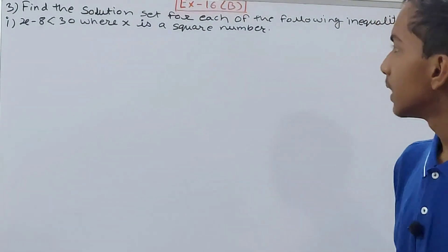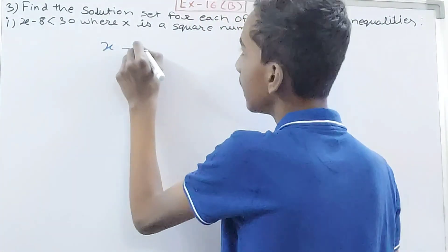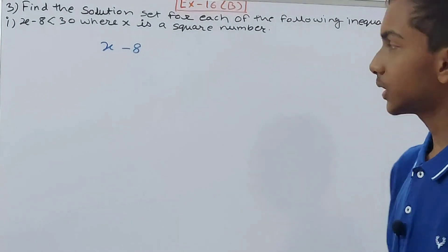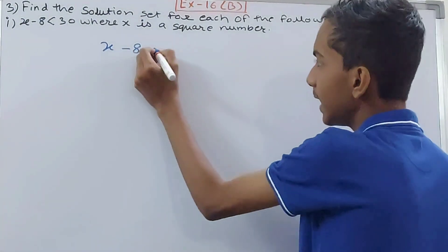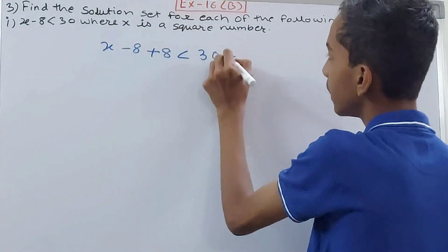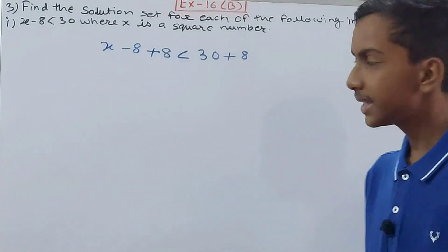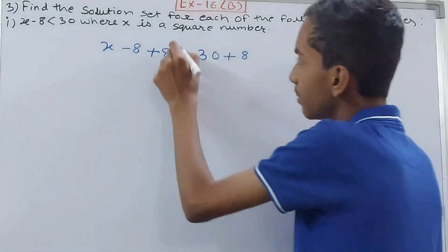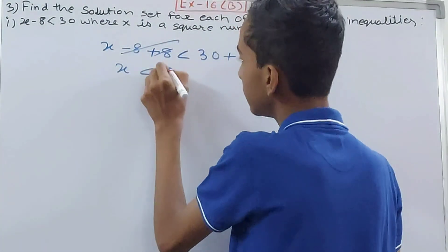For the first inequality, we have x minus 8 less than 30. I want to get rid of the minus 8, so I add 8 to both sides: x minus 8 plus 8 is less than 30 plus 8. The minus 8 and plus 8 cancel, giving us x is less than 38.